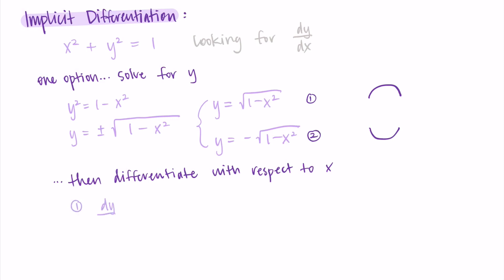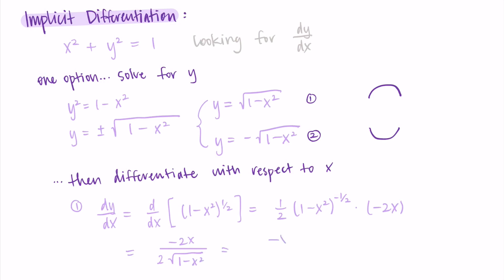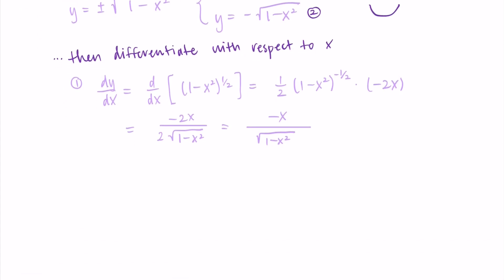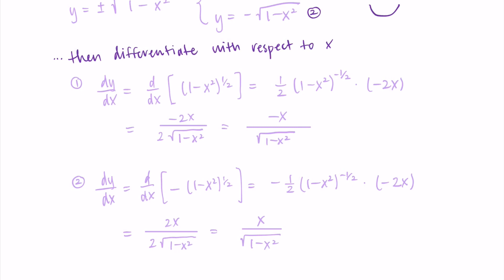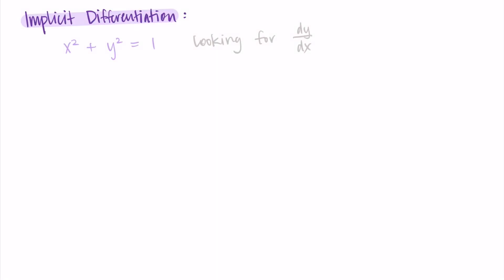Using our old method, we take the derivative of both sides with respect to x. I'll need some chain rule here: the one half comes in front, I leave the inside alone, the power decreases to negative one half, and I multiply by the derivative of the inside, which is negative two x. I can simplify — move the negative exponent to the denominator, cancel those twos — and I'm left with negative x over the square root of one minus x squared. That's the derivative of the top portion of the circle. Then I repeat this for the bottom half, which looks very similar but with an extra negative, so the negatives cancel and I'm left with positive x over the square root of one minus x squared.